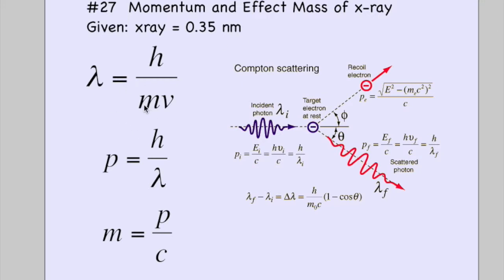Remember, mass times velocity is momentum. So if we solve for momentum equals Planck's constant divided by wavelength, we can get the momentum of an x-ray.